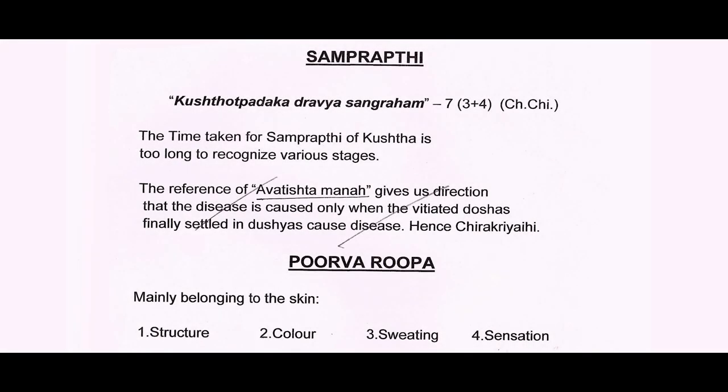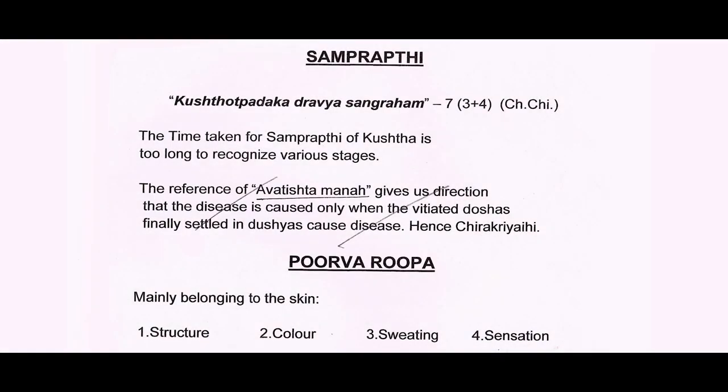Coming to Samparapthi — Kustodpaadakadharavya sangram saptani — the Kustodpaadharavya sangram are about seven, or three plus four, from Charakasamvita. The time taken for Samparapthi of Kusta is too long, and recognizing these various stages, it takes its own course of time to recognize and manage the disease. Coming to Pururupa, mainly belonging to the skin — structure of the skin, color of the skin, sweating, and sensation — these four are very important factors for Pururupa of Kusta.